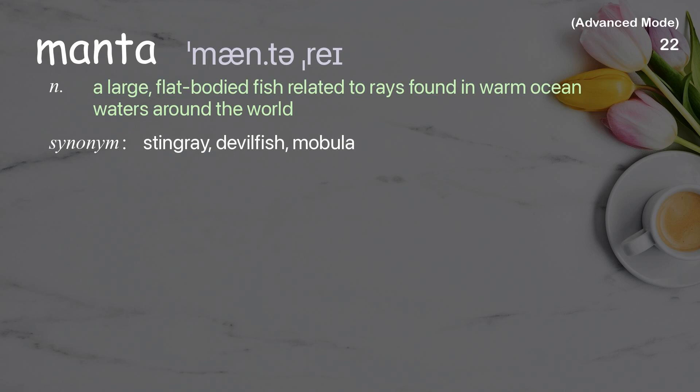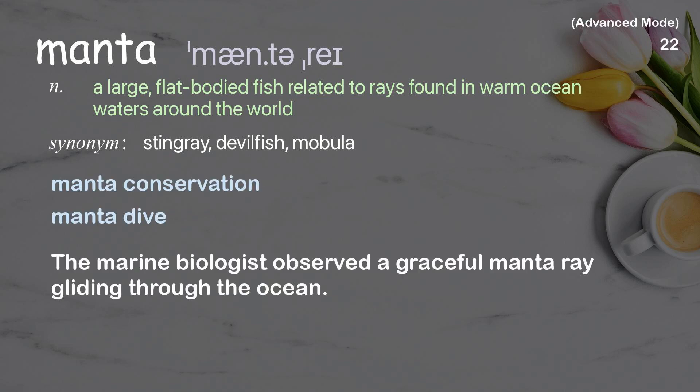Manta. A large, flat-bodied fish related to rays, found in warm ocean waters around the world. Examples: manta conservation, manta dive. The marine biologist observed a graceful manta ray gliding through the ocean.